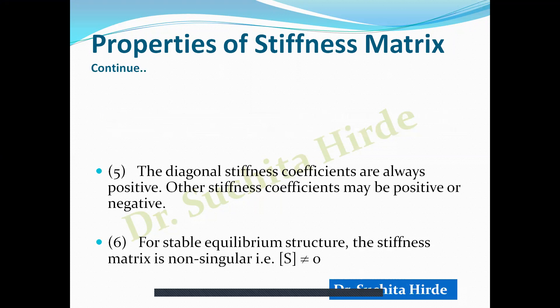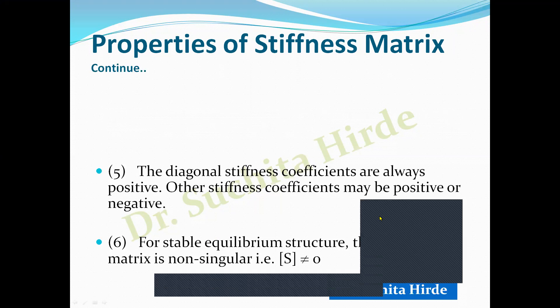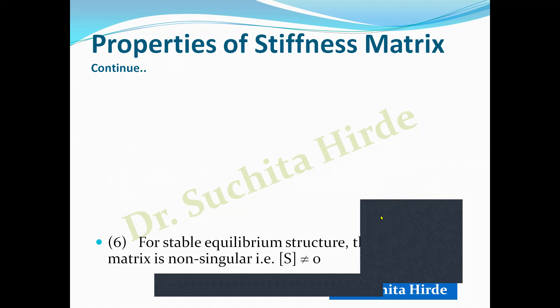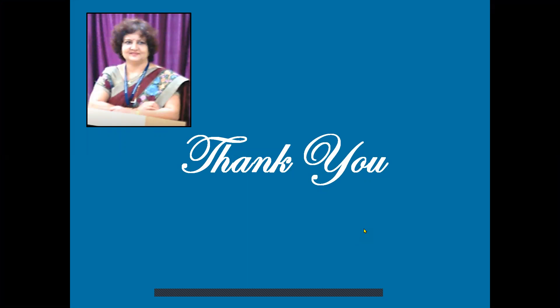Another property is that for a stable equilibrium structure, the stiffness matrix is non-singular. A matrix is singular if its determinant is zero, so for a stable structure the determinant of the stiffness matrix is never zero. These are the important properties of the stiffness matrix. In this video, we have studied how to develop the stiffness matrix and its properties. In the next video, you will learn how to develop a stiffness matrix for various types of continuous beams and portal frames. Stay connected — thank you for watching.